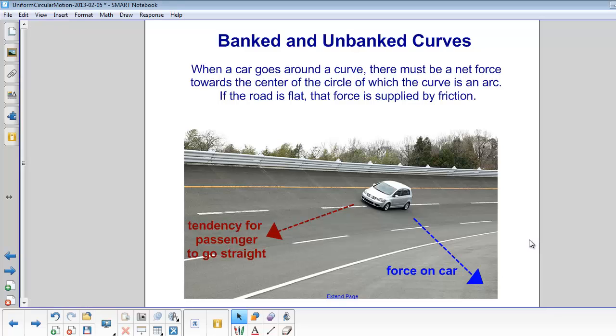Banked and unbanked curves. When a car goes around a curve, there must be a net force towards the center of the circle. If the road is flat, that force is supplied by friction.